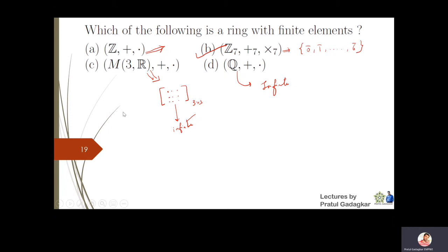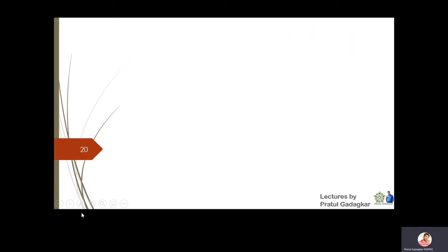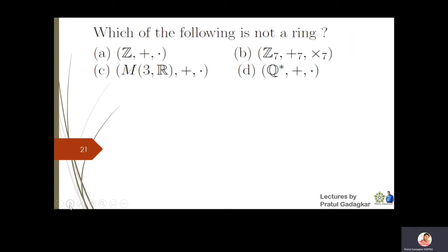The next question: which of the following is NOT a ring? Integers with respect to addition and multiplication form a ring. Z7 with respect to addition and multiplication modulo 7 is also a ring. M3R — the set of all matrices with respect to usual addition and multiplication — also forms a ring.